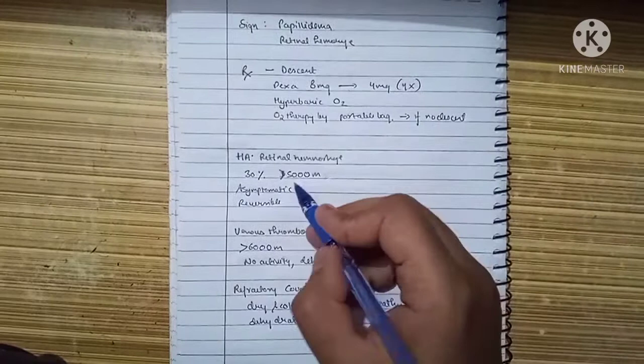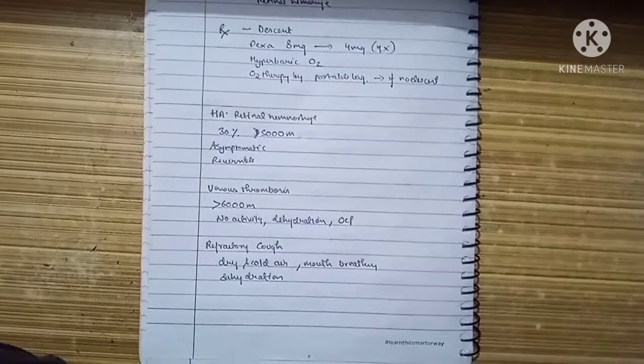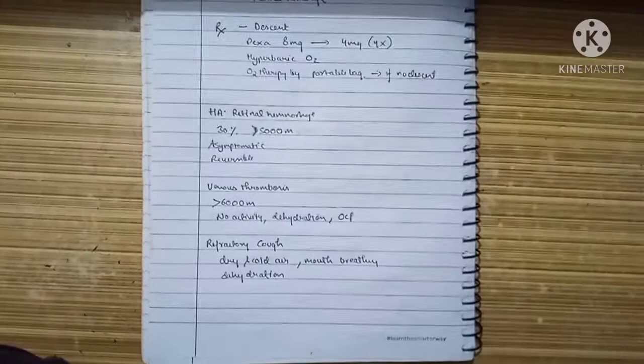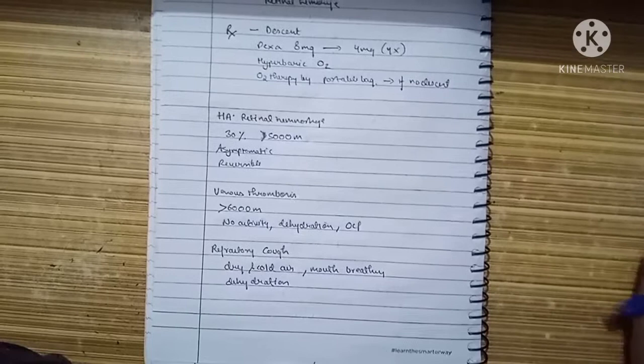Next is venous thrombosis. A patient visiting above 6,000 meters who has no activity, is dehydrated, and is on OCP can develop venous thrombosis. Refractory cough needs to be differentiated from HAPE, as HAPE also has dry cough.